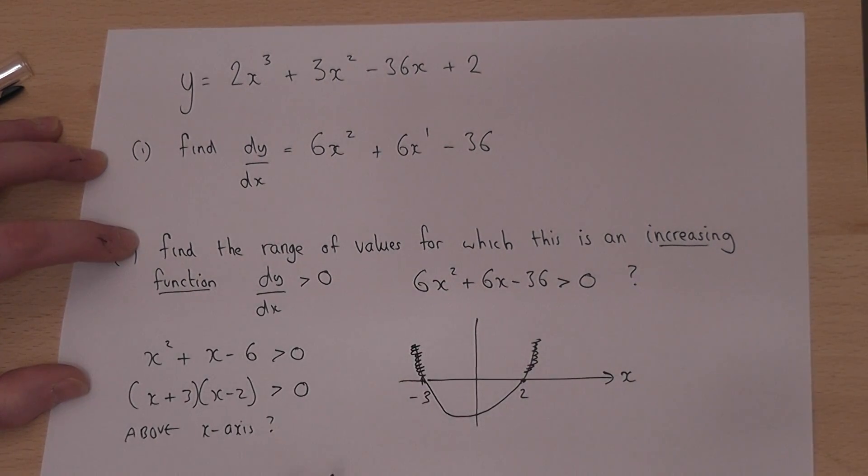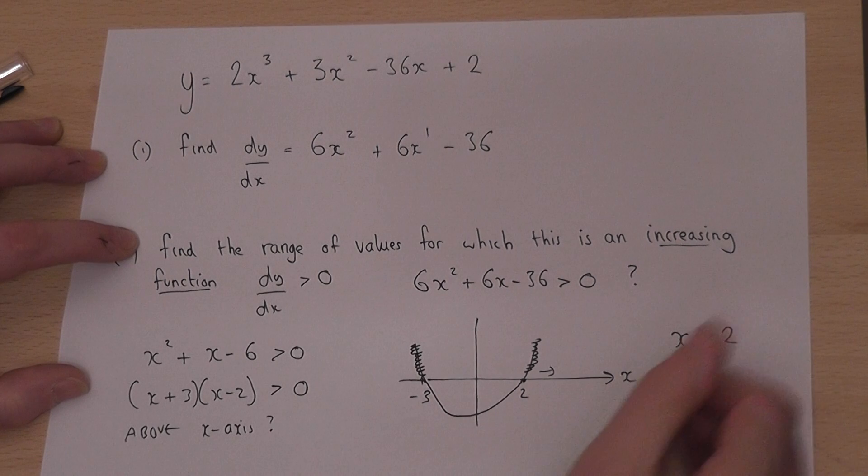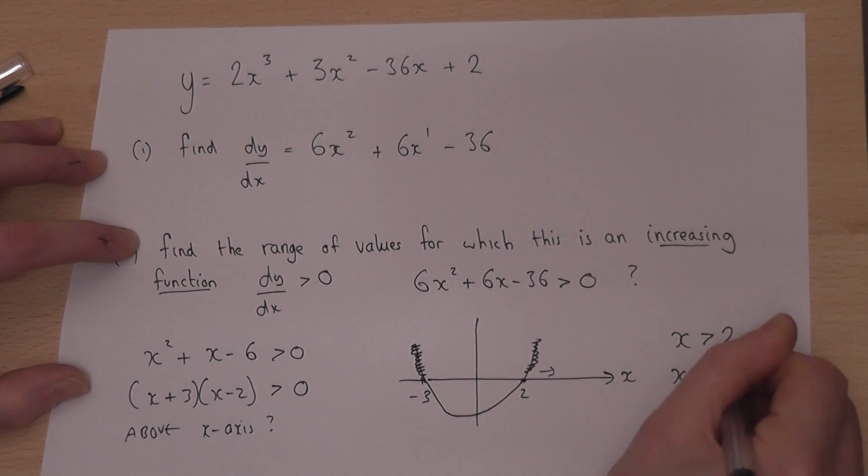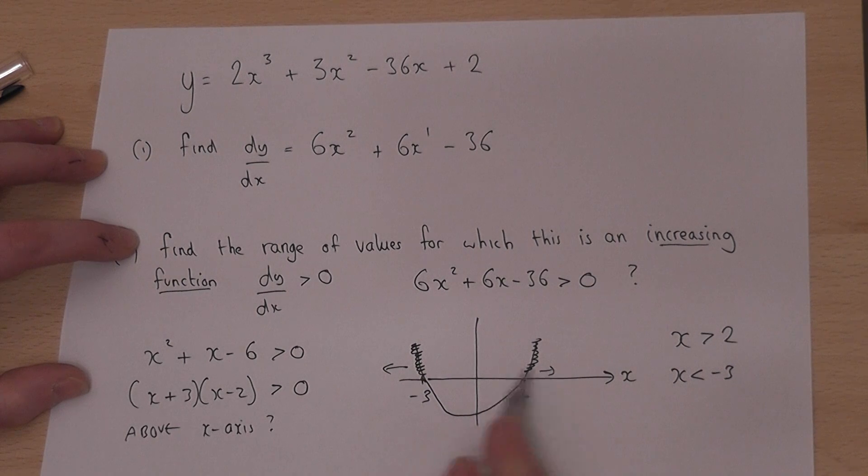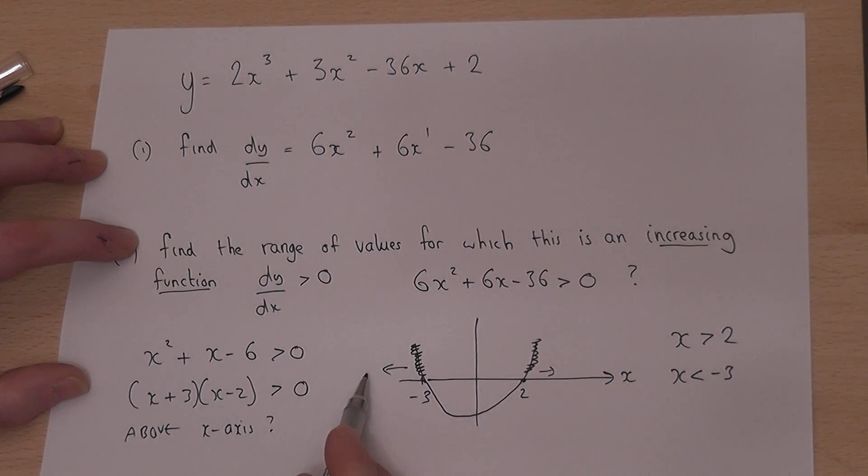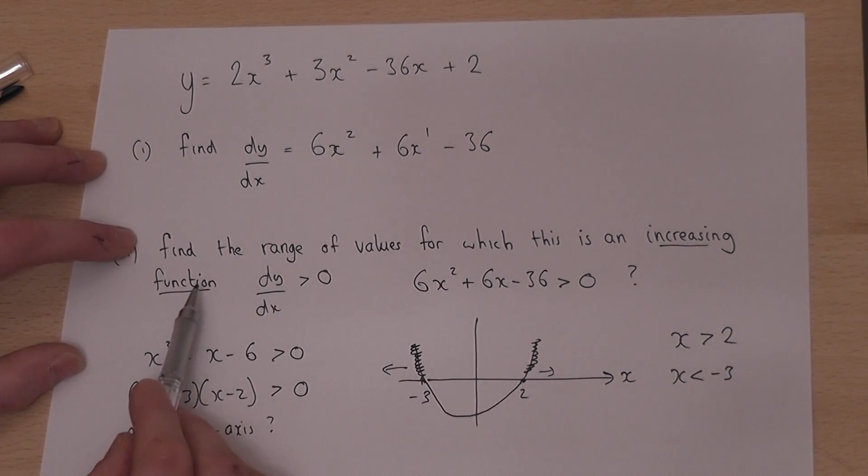So the range of values for which this is above the x-axis is x is more than 2, ie to the right, or x is less than minus 3, ie to the left. So for these values here, the gradient function is bigger than 0, and so therefore we have an increasing function.